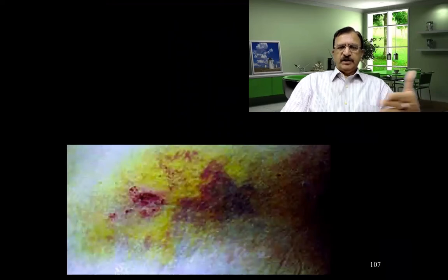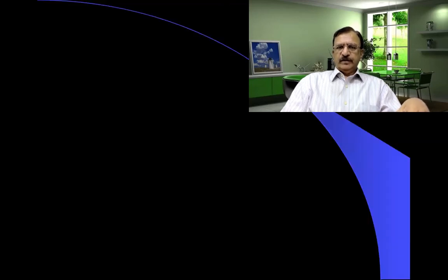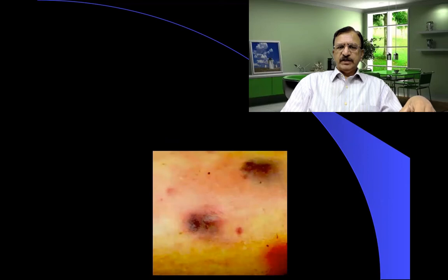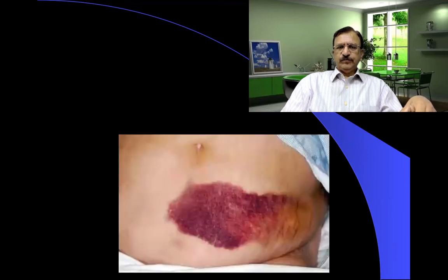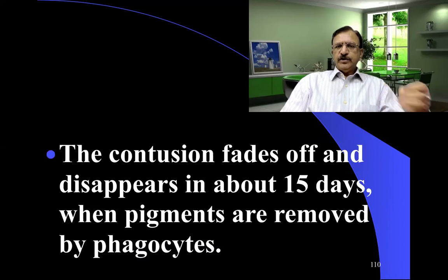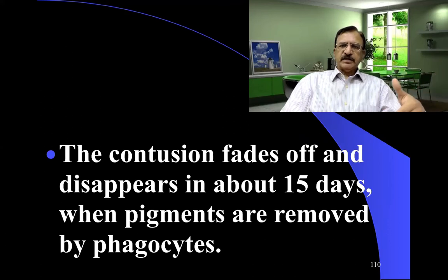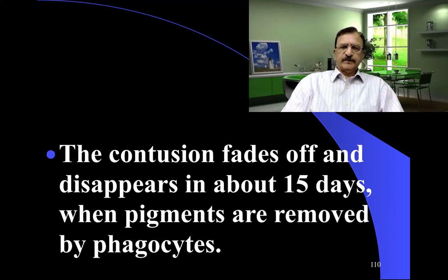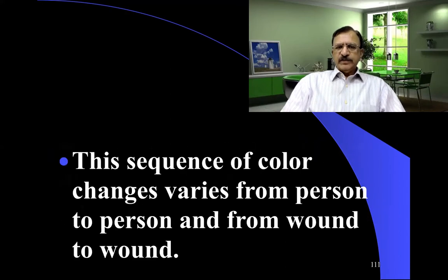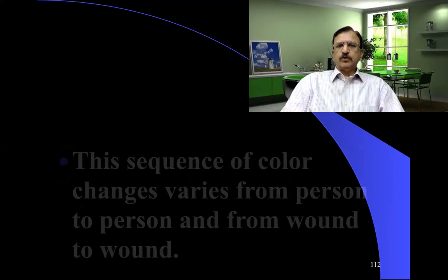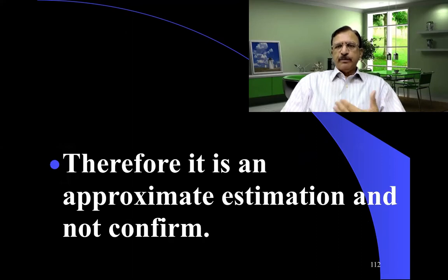This is a picture of a bruise showing the various color changes — you can see from the periphery towards the center. This is another picture showing the color changes. The contusion fades off and disappears in about 15 days when the pigments are removed by phagocytes. The sequence of color changes varies from person to person and from wound to wound, so this is an approximate estimation and not a fixed timeframe.